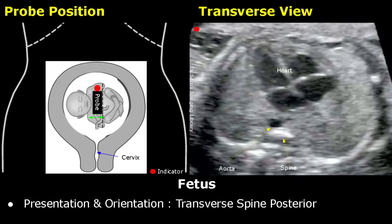Transverse spine posterior position is another type of transverse presentation in which the fetal head is towards the right side and facing the anterior aspect of the uterus. So, keeping the probe in longitudinal orientation, if we move to the right side we will find the fetal head in transverse plane. When we move the probe from the right side to the left side, we will find the fetal heart in this position with the spine at the bottom. Moving further to the left will bring the stomach in view, also at this side.